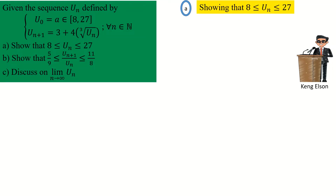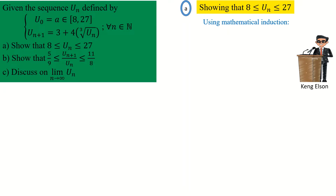We begin with part (a): showing that u_n is between 8 and 27. u_n is our sequence defined for all n in the natural numbers. There are two ways to do this proof, but I'm going to use mathematical induction, which is the method most accessible to you.